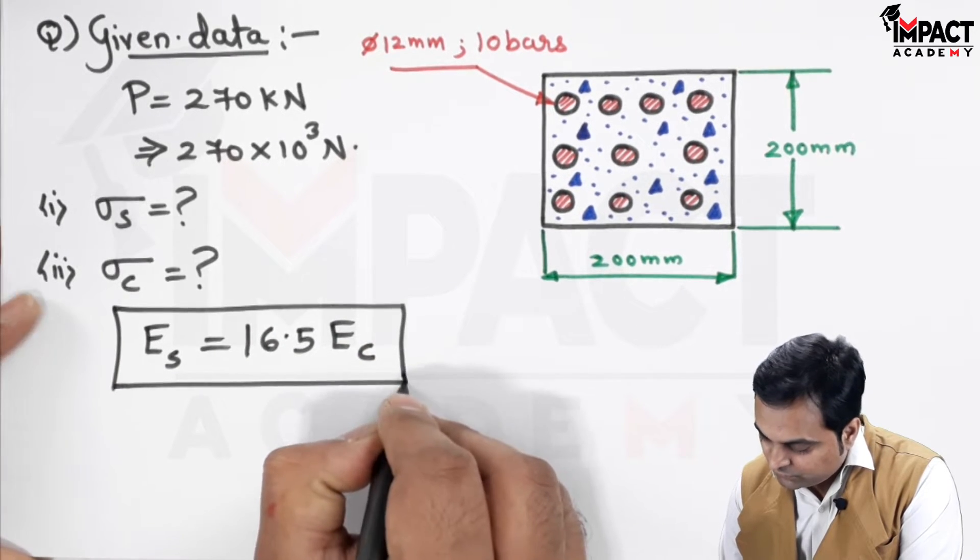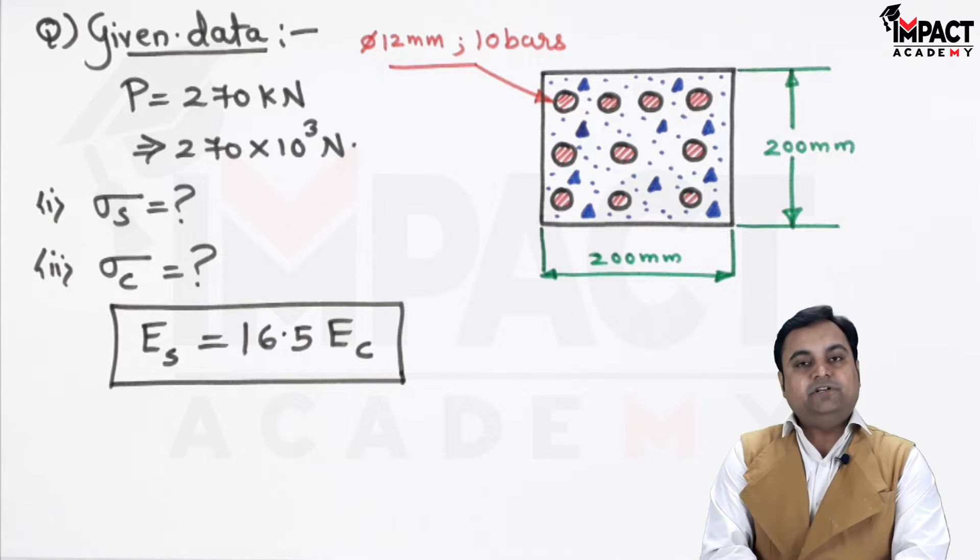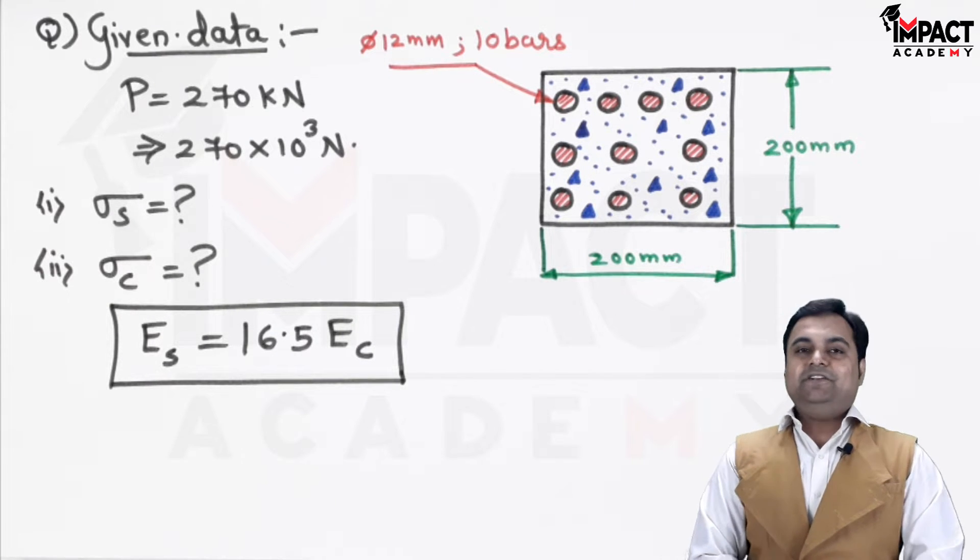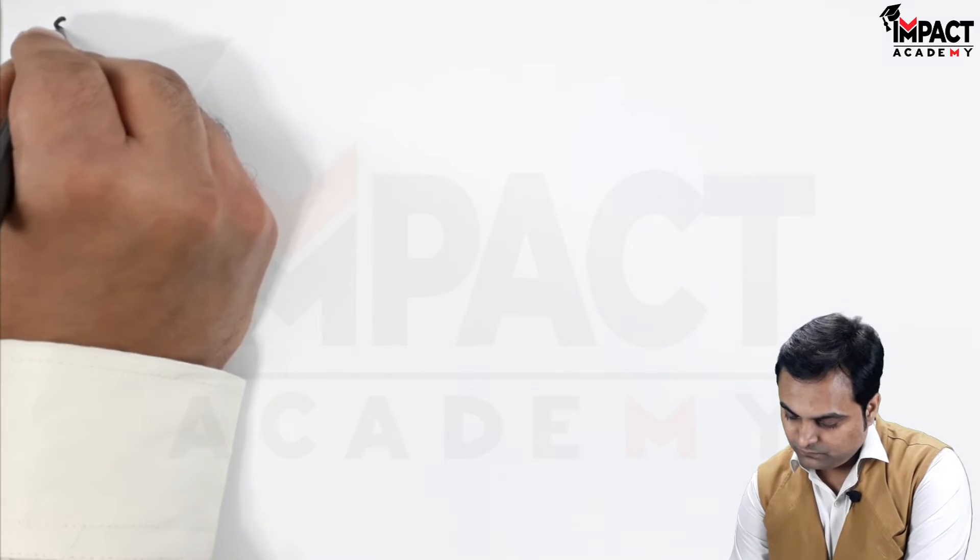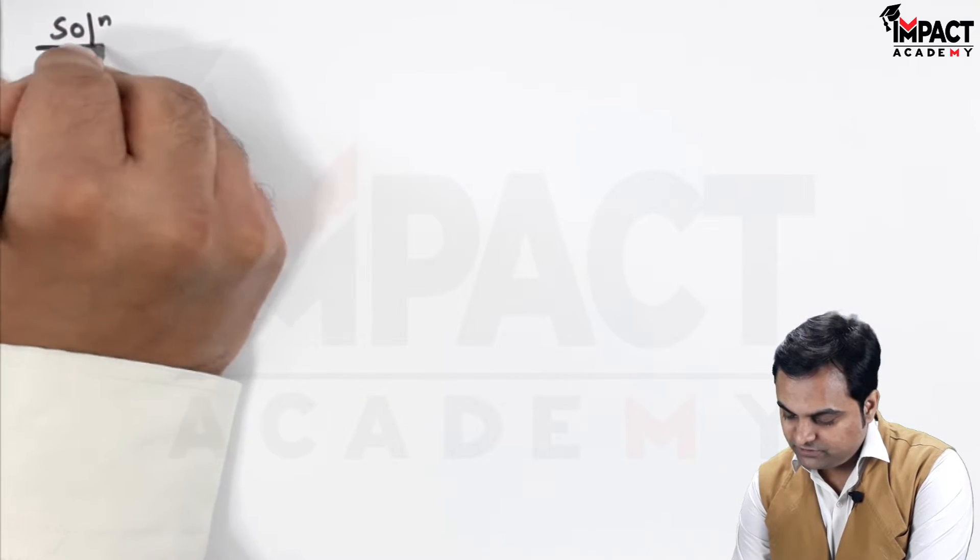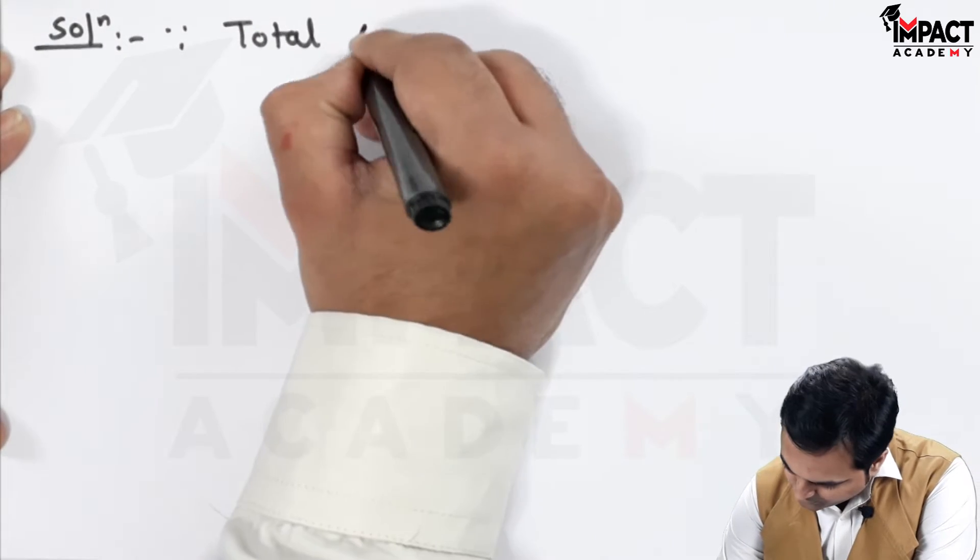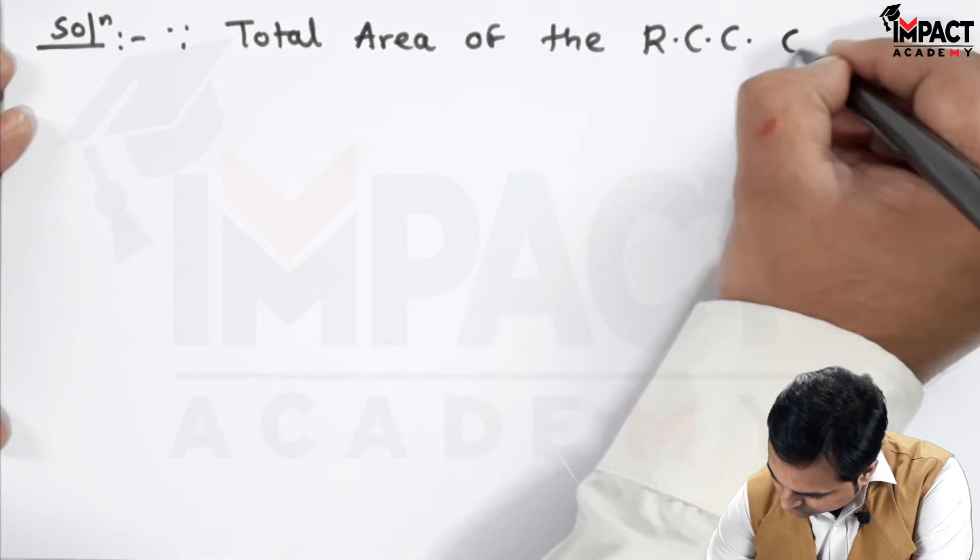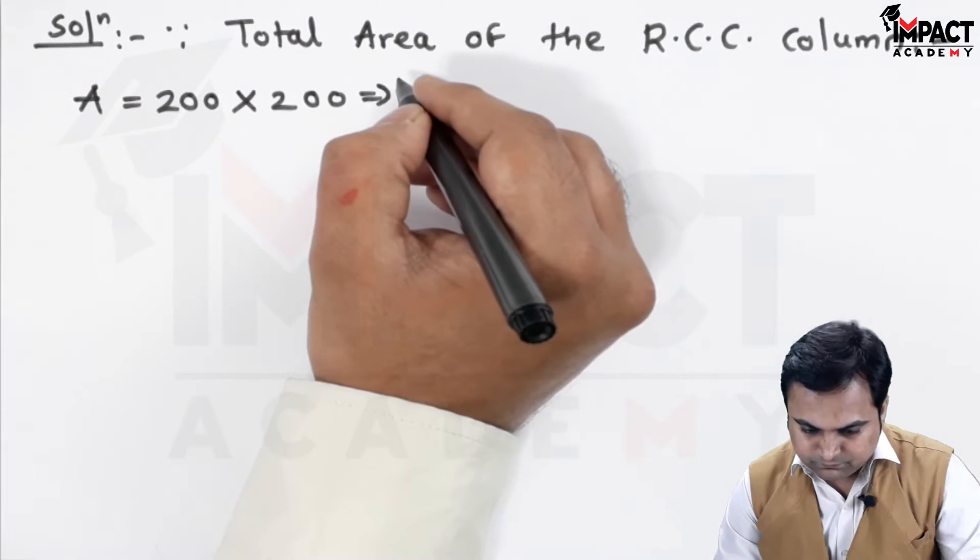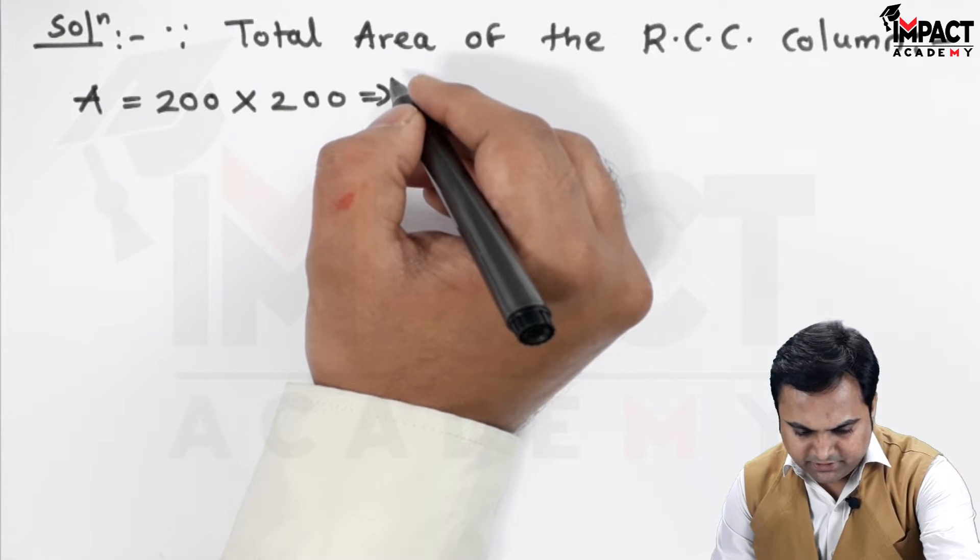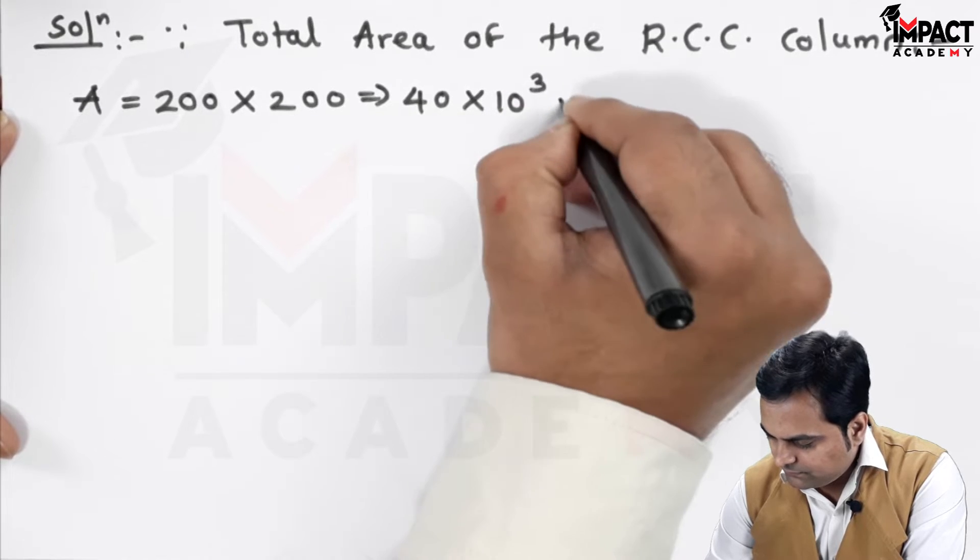So, for such a condition we have to find the stresses in both the materials. So, let us get started with the solution part. Solution, first I will get the total area of the RCC column.